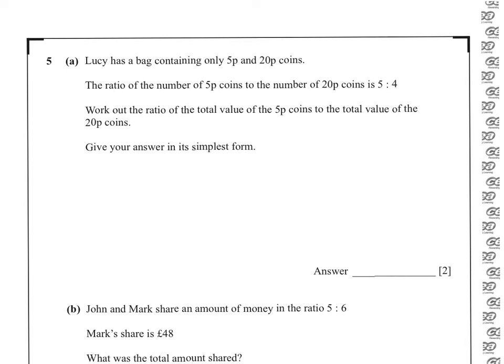We have a ratio of 5 to 4. The 5p coins are worth 5p, and the 20p coins are worth 20p. So that's a ratio of their value of 25 to 80. 5 goes into 25 five times, and goes into 80 sixteen times.